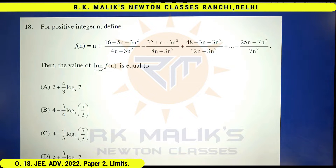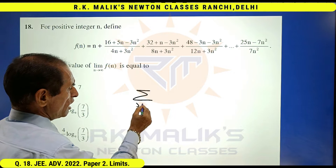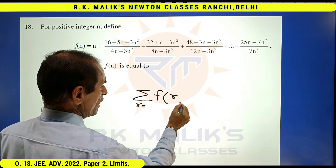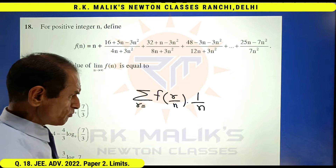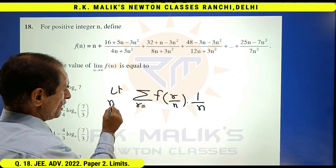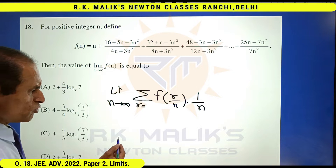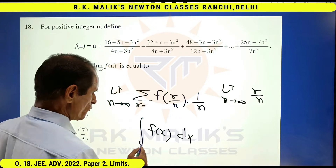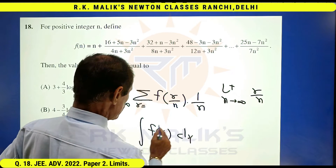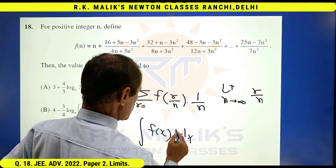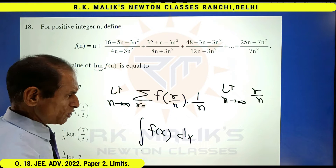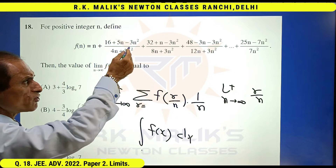As seen in these types of questions, we always try to bring the question into the standard form of sigma, where r goes from some finite number to n, with f(r/n) and 1/n, and limit as n tends to infinity. Then r/n becomes x and 1/n becomes dx. However, this is applicable only when all the terms are tending to zero — here they are not, so we cannot directly use this formula.